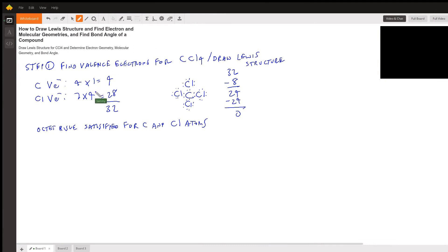Hello everyone, this is Sammy. The topic is how to draw Lewis structure and find electron and molecular geometries and find bond angle of a compound. The question is, draw Lewis structure for CCl4, which is carbon tetrachloride, and determine electron geometry, molecular geometry, and bond angle.